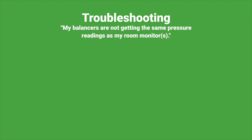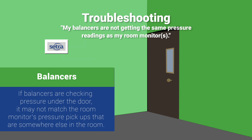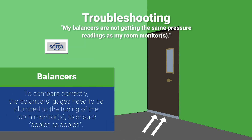My balancers are not getting the same pressure readings as the room monitors. Many times, balancers check the pressure under the door of a room and it may not match that of the room monitors whose pressure pickups are somewhere else in the room. To compare correctly, the balancers' gauges need to be plumbed into the tubing of the room monitors to ensure you're comparing apples to apples.